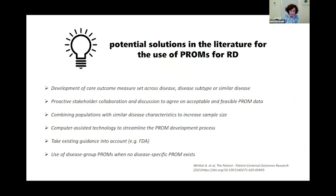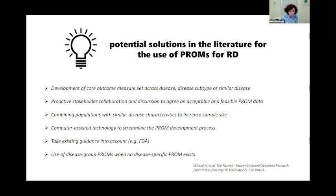Another recent paper offers potential solutions for using PROMs in rare diseases. Key suggestions include developing core outcome measure sets across diseases or disease subtypes, using disease group PROMs when no specific PROMs exist, combining populations with similar disease characteristics to increase sample size, fostering collaboration among proactive stakeholders on feasibility of PROMs data, and using computer-assisted technology to streamline the PROM development process.